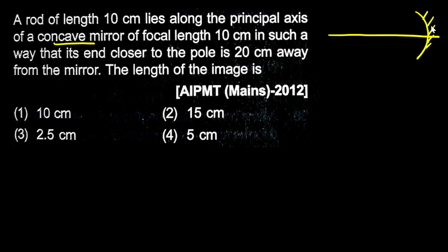This is a concave mirror. A 10 cm rod is kept on its principal axis. The focal length is 10 cm, which is always negative for a concave mirror.